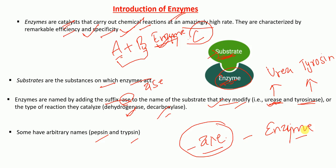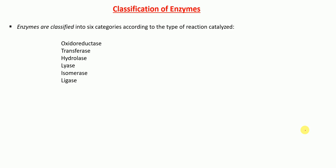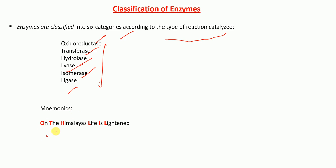Enzymes are classified into six different categories according to the type of chemical reaction they catalyze: oxidoreductases, transferases, hydrolases, lyases, isomerases, and ligases. The mnemonic to remember these classes in order is: 'On The Himalayas Life Is Lightened' — O for oxidoreductases, T for transferases, H for hydrolases, L for lyases, I for isomerases, and L for ligases.